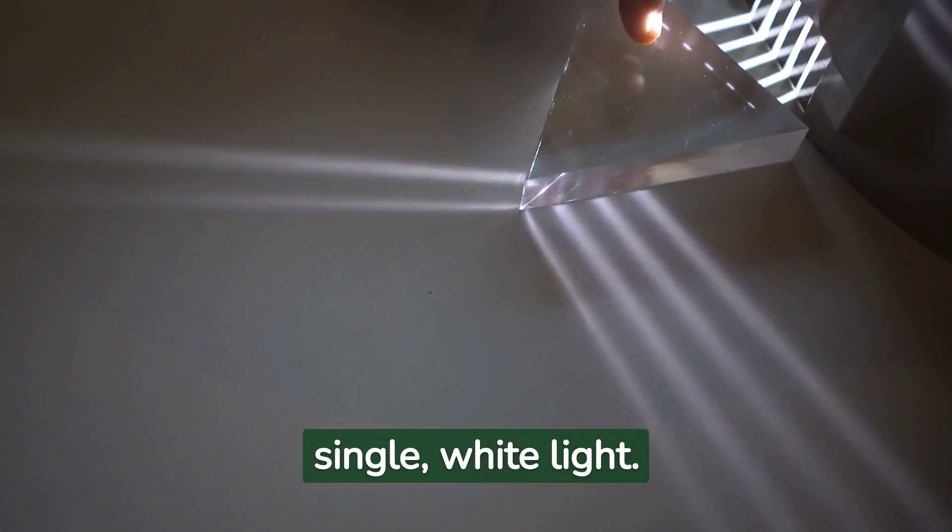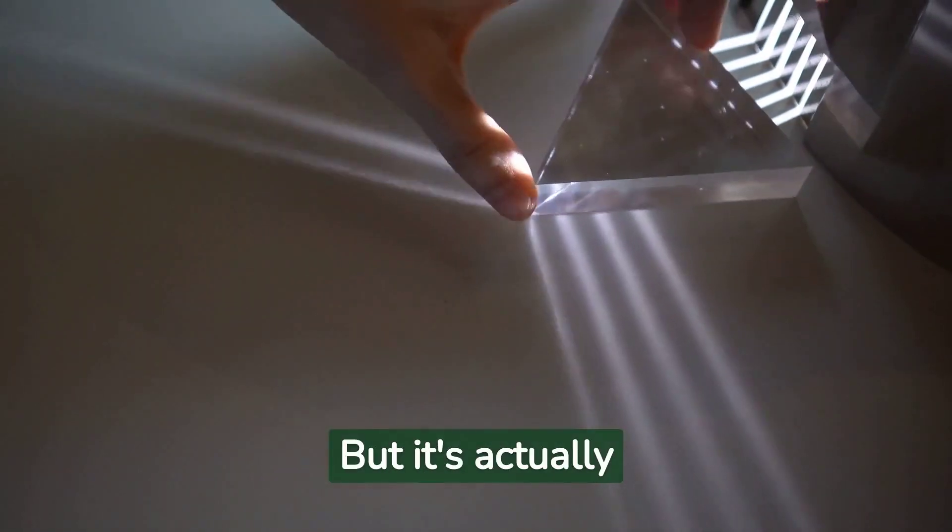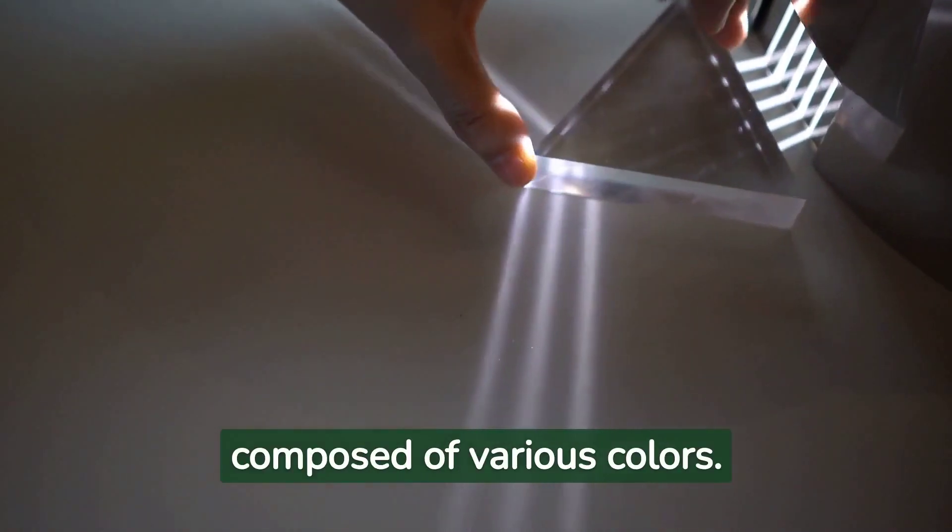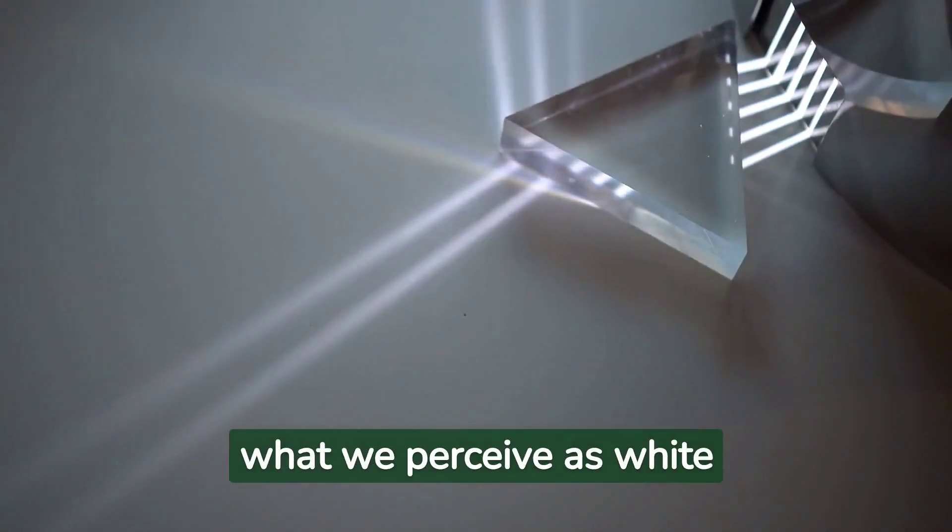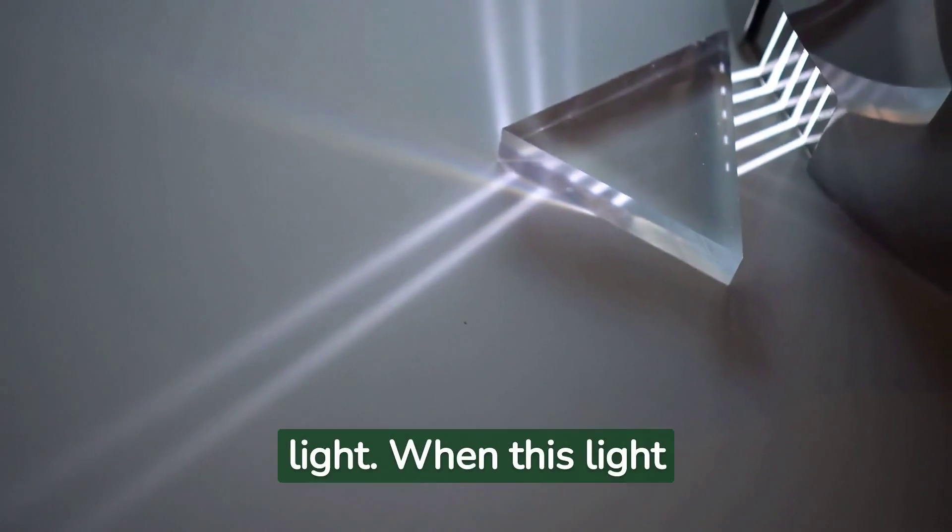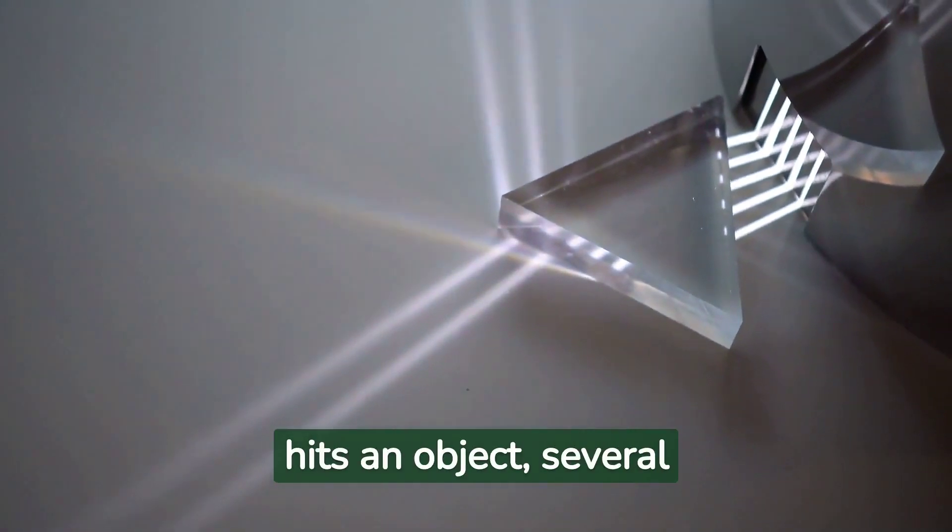Sunlight may seem like a single white light, but it's actually composed of various colors. Each color has a different wavelength and when combined they form what we perceive as white light. When this light hits an object, several things can happen.